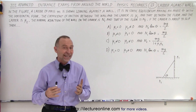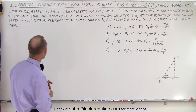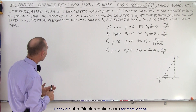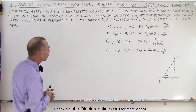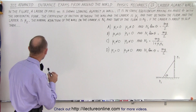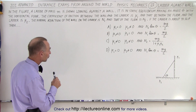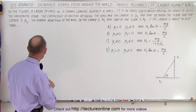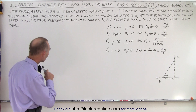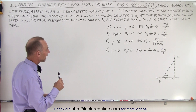Here's such a problem on the JEE Advanced test, so kind of wondering how hard it's going to be. It says that in the figure, a ladder of mass m is shown leaning against the wall. It is in static equilibrium making an angle theta with the horizontal floor. The coefficient of friction between the wall and the ladder is mu sub 1, and that between the floor and the ladder is mu sub 2. The normal reaction of the wall on the ladder is N1, and that of the floor is N2.